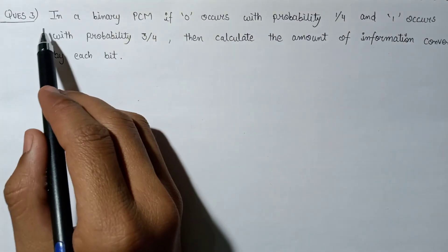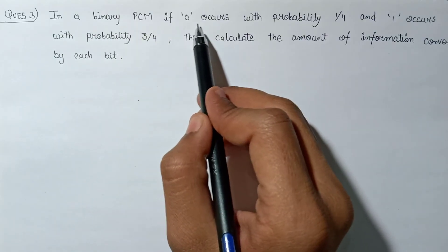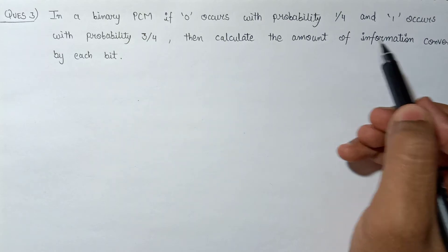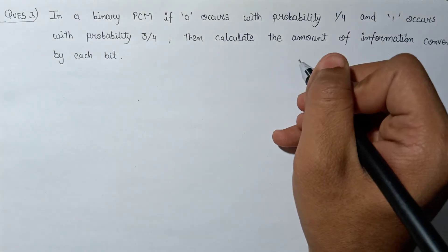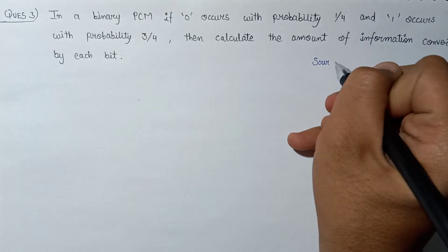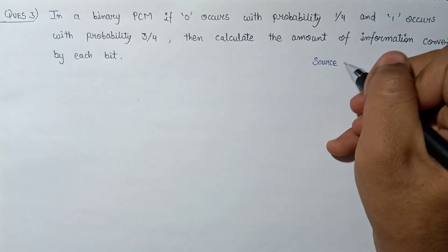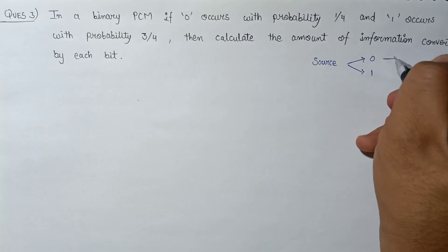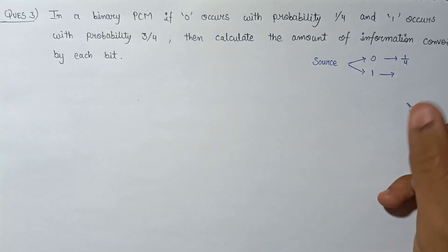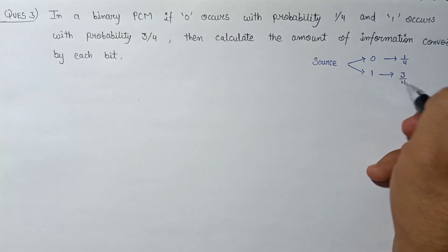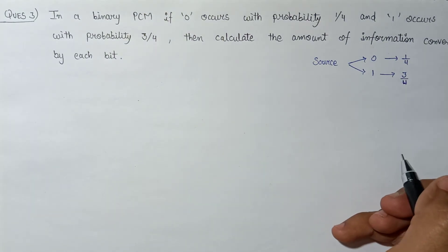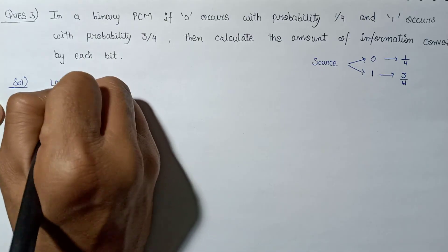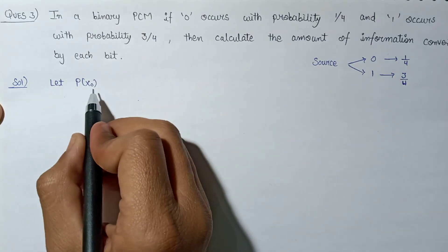Now let's have a look at question number 3. In a binary PCM, if 0 occurs with probability 1/4 and 1 occurs with probability 3/4, calculate the amount of information content for each bit. The binary source emits two symbols, 0 and 1, with P(0) = 1/4 and P(1) = 3/4. We need to calculate the information content.